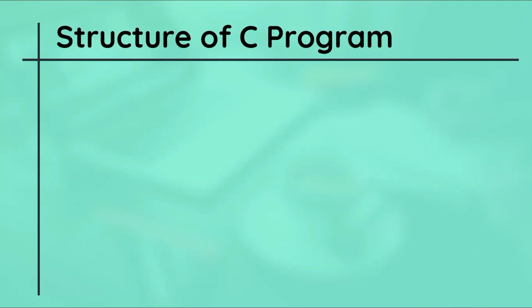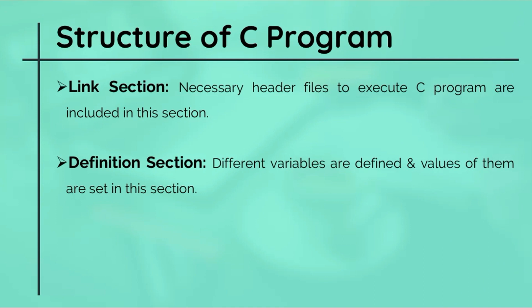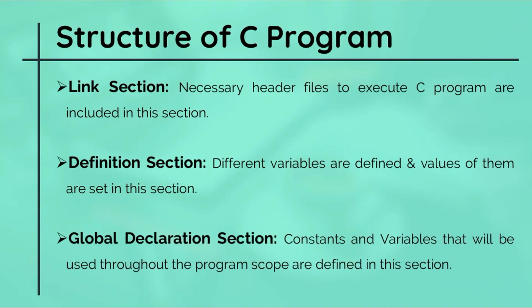The next one is the link section. Necessary header files to execute a C program are included in this section. The next one is the definition section. Different variables are defined and values of them are set in this section. Next one is the global declaration section. Constants and variables that will be used throughout the program scope are defined in this section.